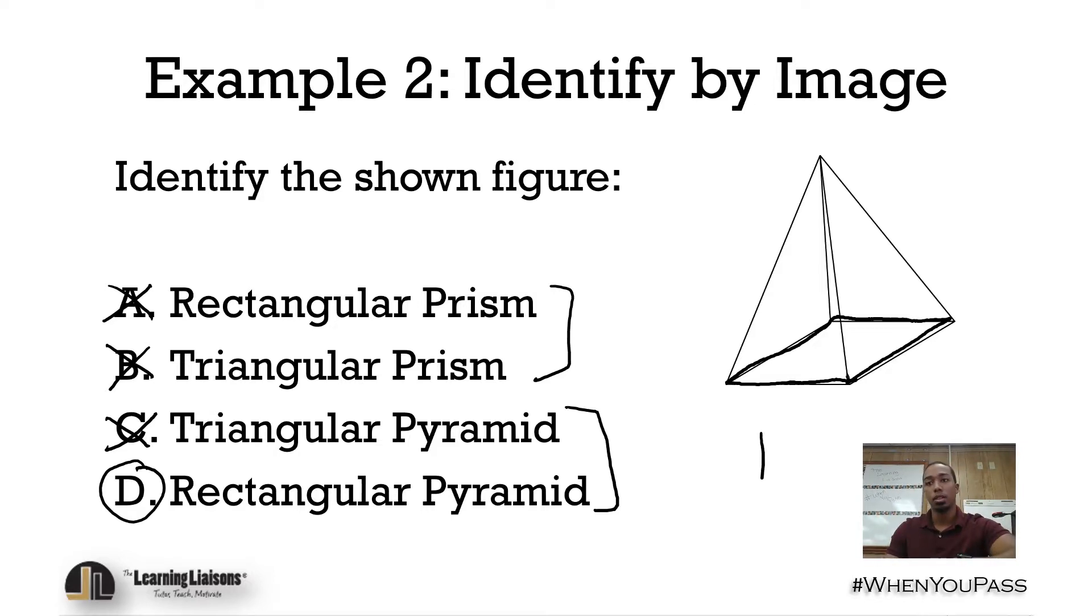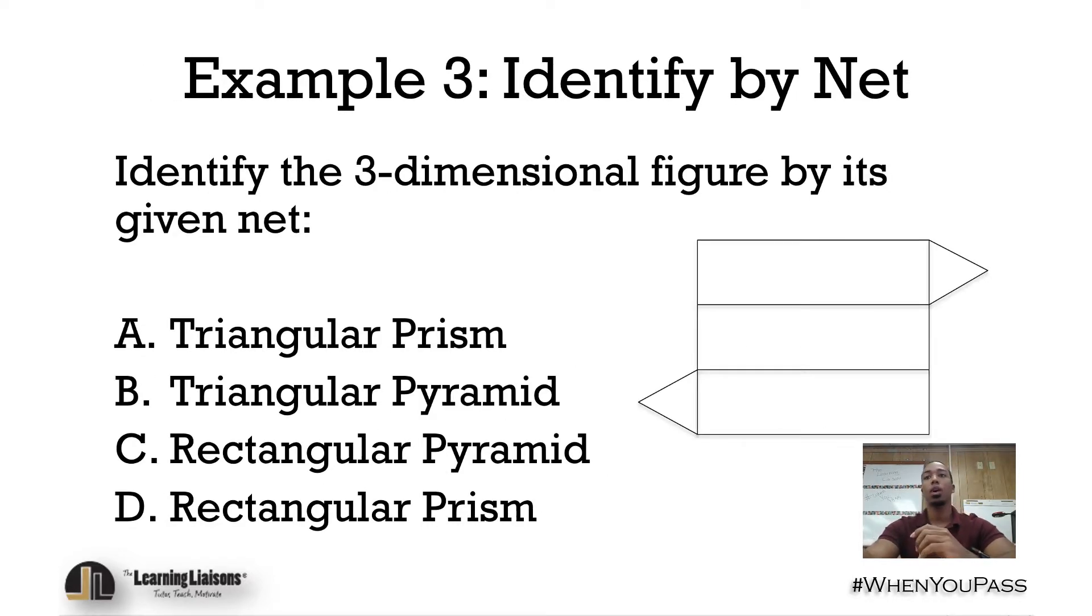And this being shown in 3D, if we were to go ahead and just look at it from the bottom, we could see something like a, maybe like a rectangle of this sort, something like that, if we looked at it directly from the bottom up. But there we go. And our last example here, we're gonna go ahead and identify by net.